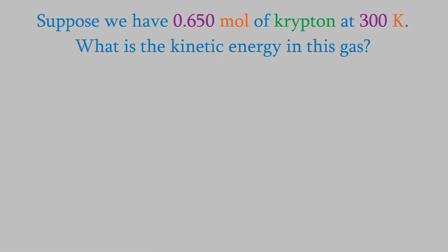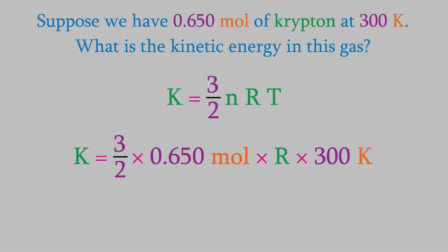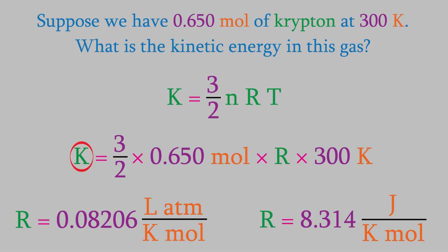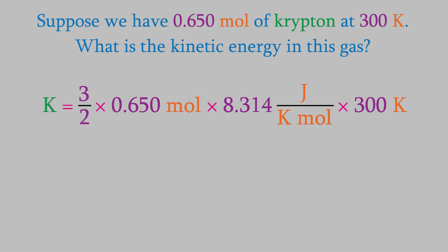Suppose we have a 0.650 mole sample of krypton at 300 Kelvin. What would be its kinetic energy if it behaves like an ideal gas? We use this equation: 0.650 moles for n and 300 Kelvin for T. There are two values for R depending on units — 0.08206 L·atm per K·mol, or 8.314 J per K·mol. Since we want energy in joules, we use 8.314, giving a result of 2,430 joules.